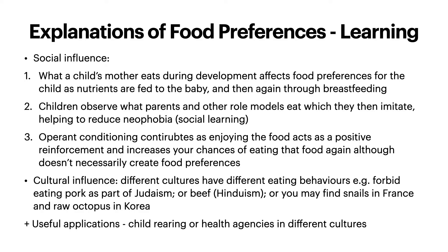Then we have operant conditioning. Enjoying the food acts as positive reinforcement and increases your chances of eating that food again, although it doesn't necessarily create food preferences. Then you also have cultural influence. Different cultures have different eating behaviours. Certain religions forbid eating pork — for example, Judaism — or forbid eating beef — for example, Hinduism. You're more likely to find snails in France and raw octopus in Korea than in the UK. There are useful applications for child rearing and health agencies, as knowing what people are likely to eat allows them to adjust their offerings.